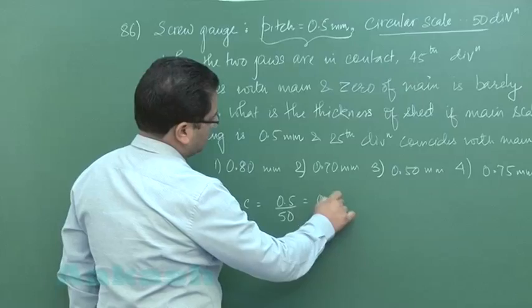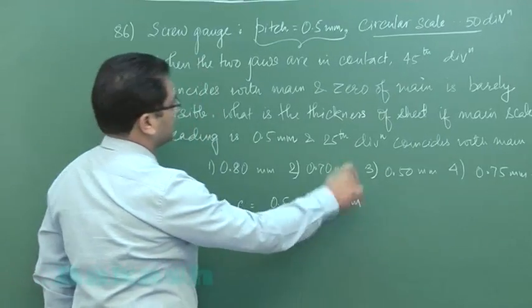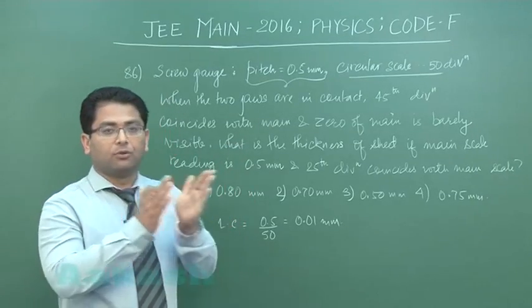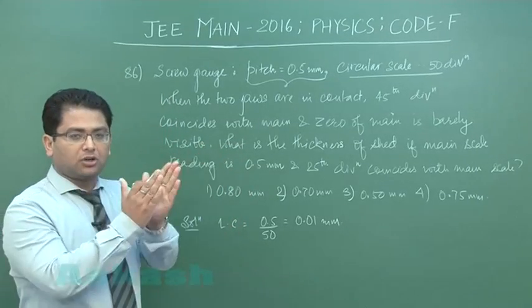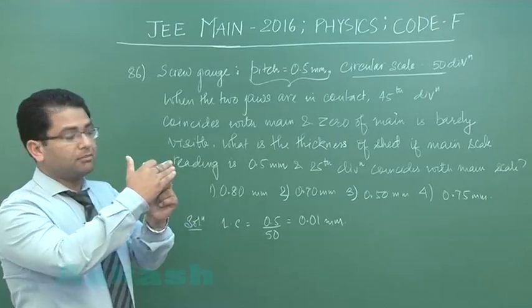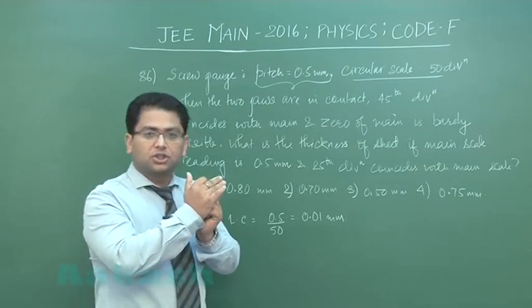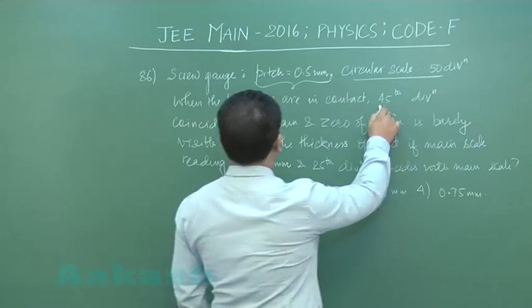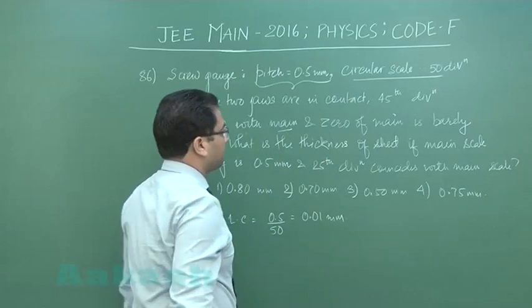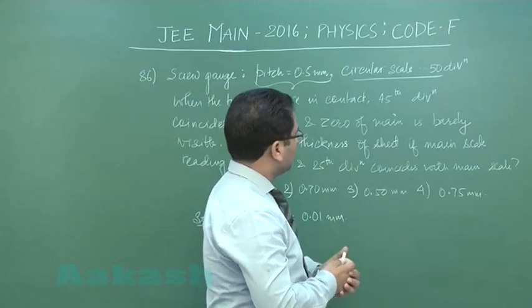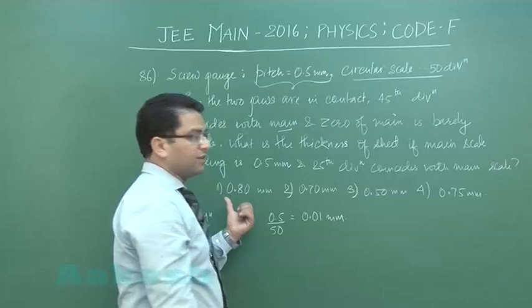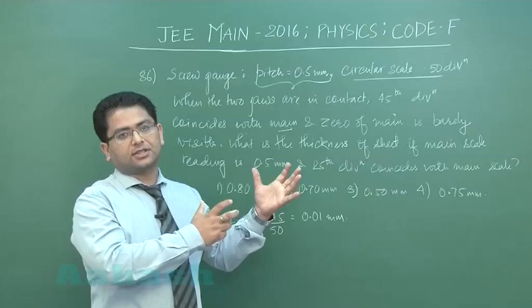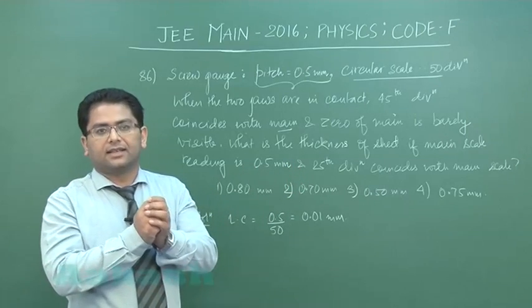It says when the two jaws are in contact—that means before measurement—ideally it should show zero reading. But this time it says the 45th division coincides with the main scale, meaning there is an error, and the zero of the main scale is barely visible. That means the zero has already been crossed.